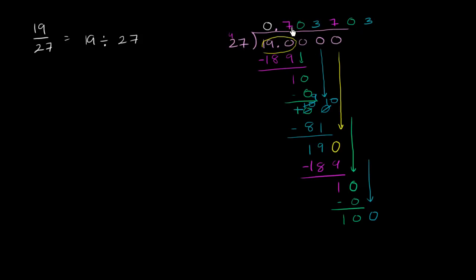It's 0.703703. And we're just going to keep repeating 703. This is going to be equal to 0.703703703, on and on and on forever.